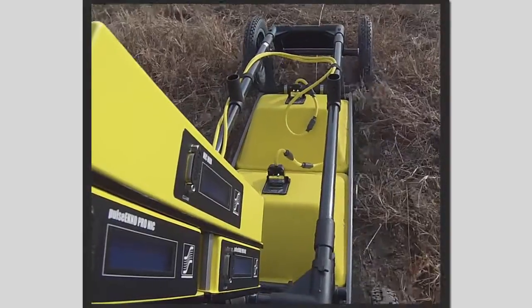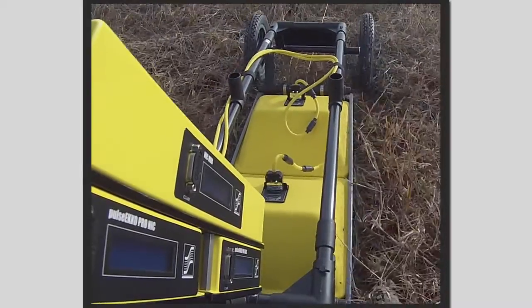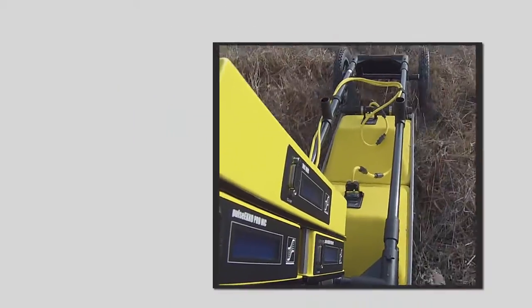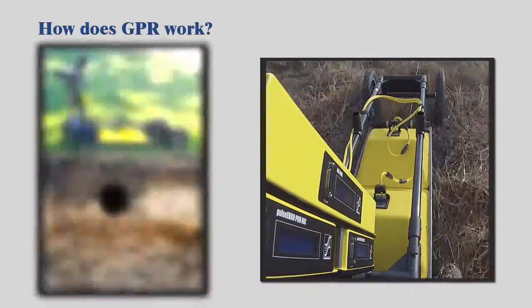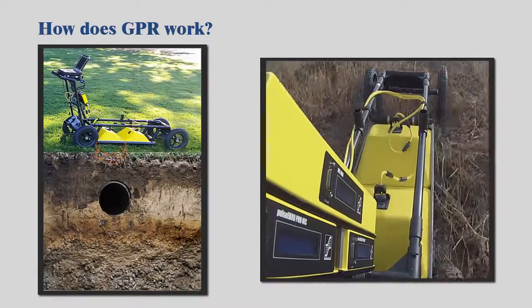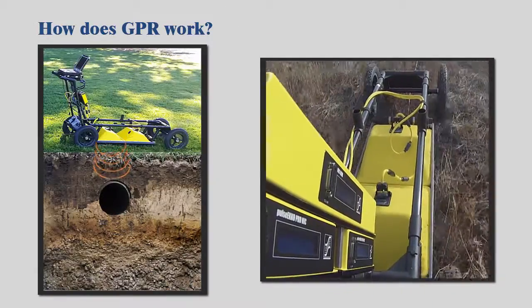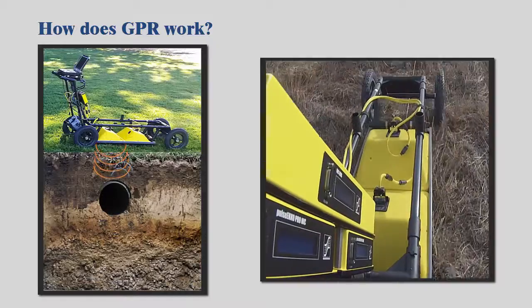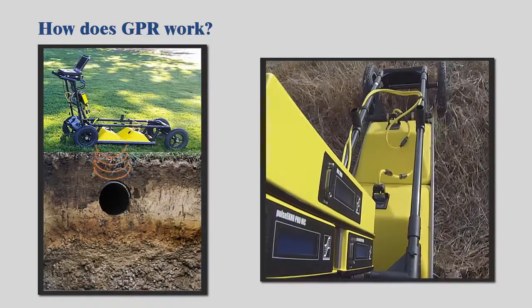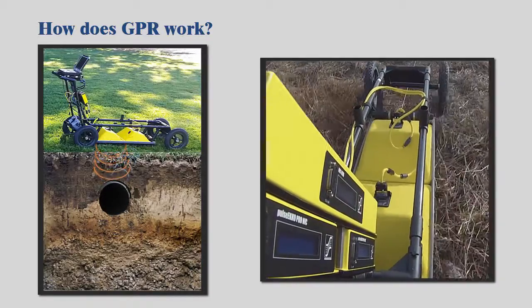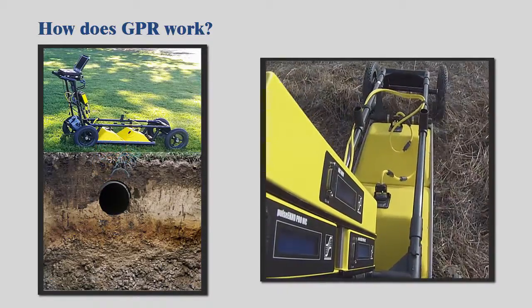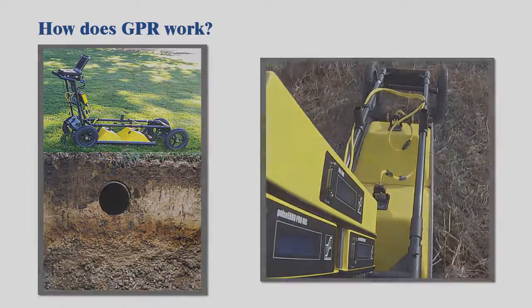Ground penetrating radar is also known as GPR. GPR antennas send and receive electromagnetic waves. When the waves return to the antenna, travel time and amplitude of the signal are recorded.